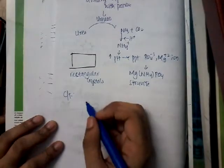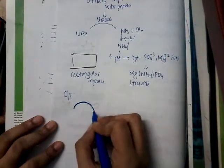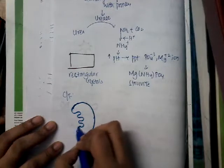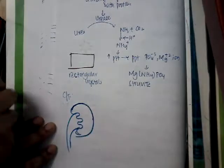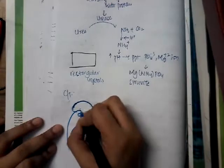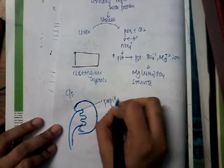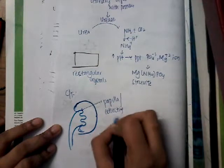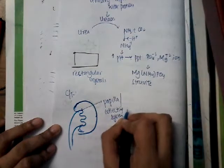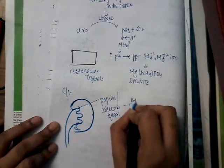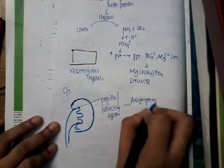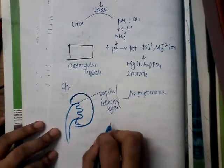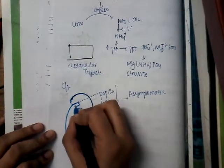If the stone grows in the papillae or collecting system of the kidney, then it is asymptomatic. In such situations it is just detected incidentally on a radiograph. If the stone enters the ureteropelvic junction or ureter, then it becomes symptomatic.